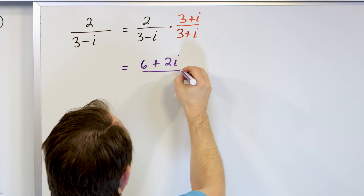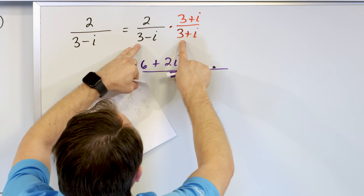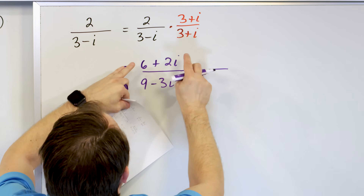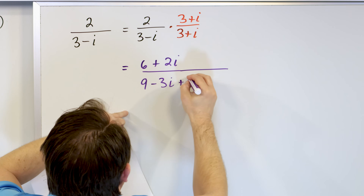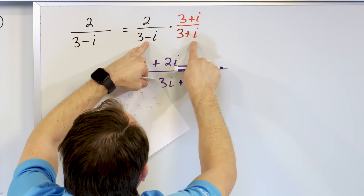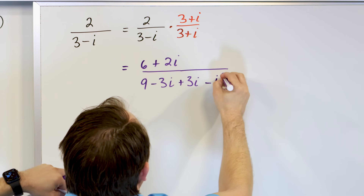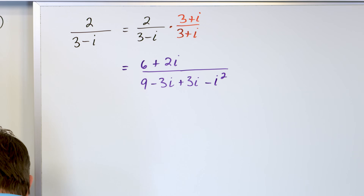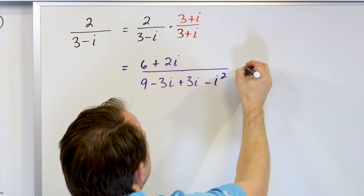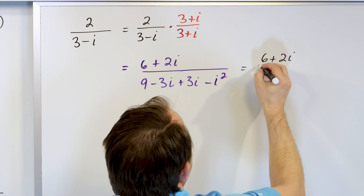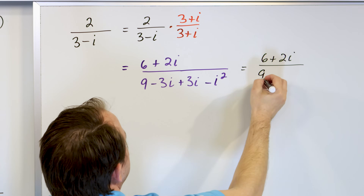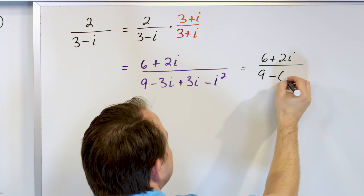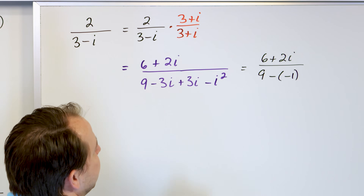The denominator is more involved because we have to do FOIL. Three times three is nine. Inside terms: negative three i. Outside terms: positive three i. Those cancel. Then negative times positive gives negative, i times i is i squared. So the denominator has nine, the i terms cancel, minus i squared which is minus negative one.